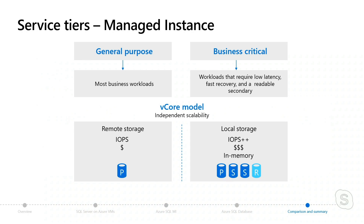Finally, what happens in the back-end is we basically deploy an availability group for you. We'll talk more about the details later, but basically we have four replicas for you, and one of those we actually allow you to leverage as a readable secondary. So if you want to separate your read and write workloads, this can be an interesting option with business critical.